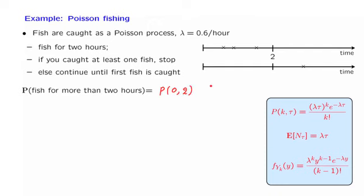We can use this formula, substitute k equal to 0, tau equal to 2, lambda equal to 0.6, plug in the numbers, and obtain a numerical answer. We will not bother with numerical answers; we will just be writing down the expressions that give us the answers.